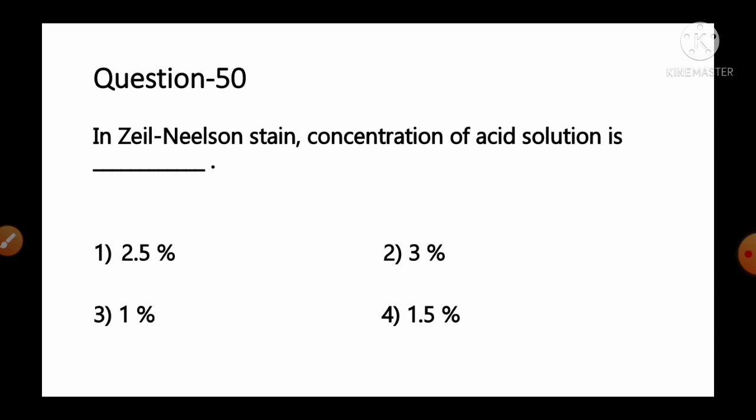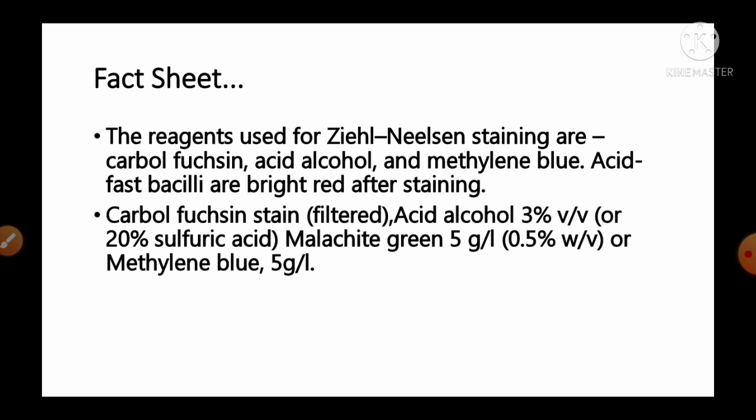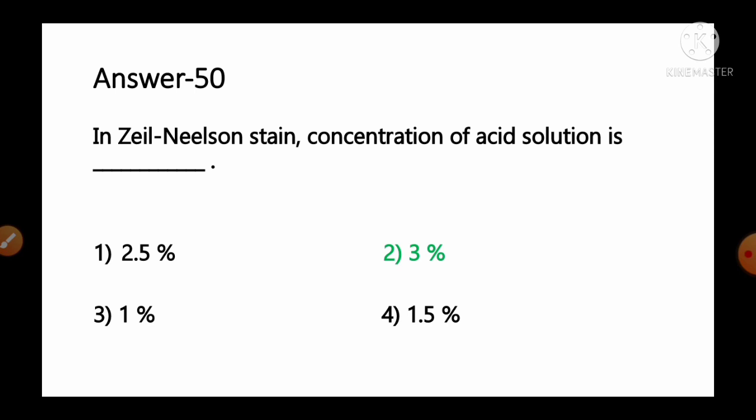Question number 50: In Ziehl-Neelsen stain, concentration of acid solution is — options: 1) 2.5%, 2) 3%, 3) 1%, 4) 1.5%. The reagents used for Ziehl-Neelsen staining are carbol fuchsin, acid alcohol and methylene blue. Acid fast bacilli are stained bright red. The concentration of acid alcohol used is 3% v/v; if sulfuric acid is used, it is 20%. So option number 2, 3%, is the correct answer.